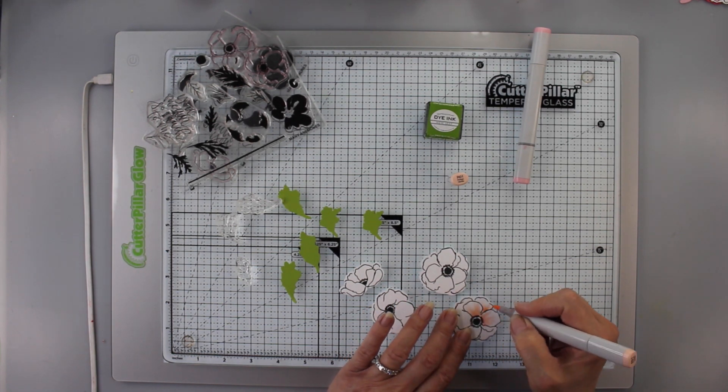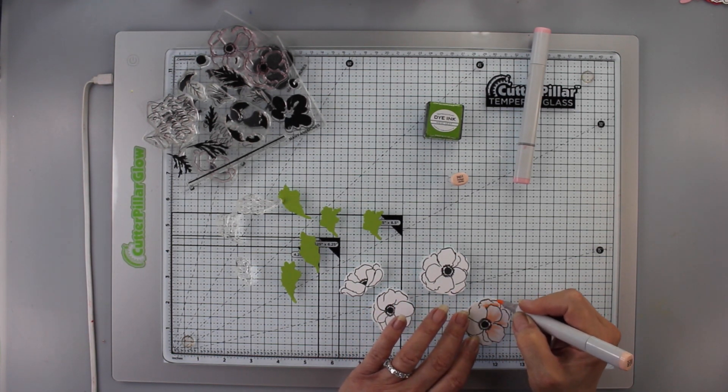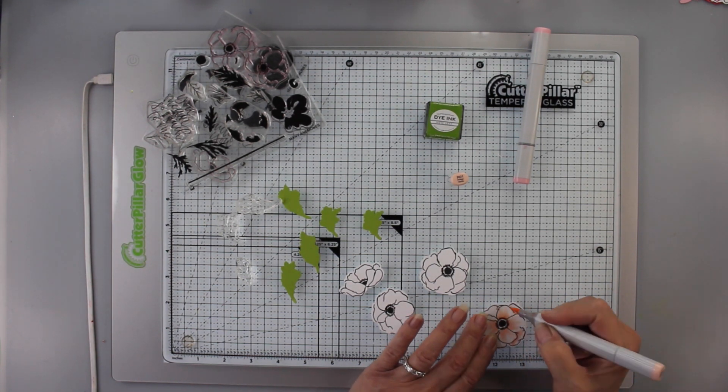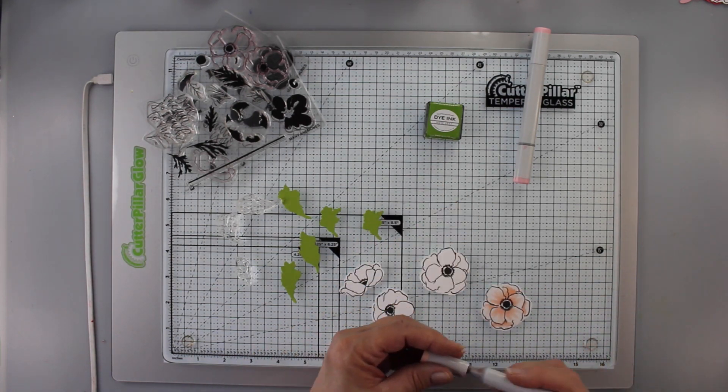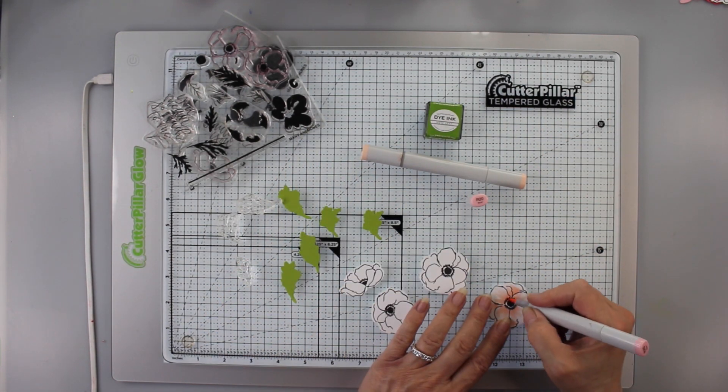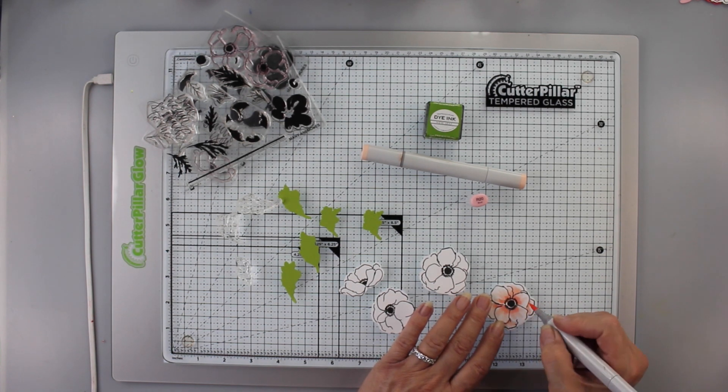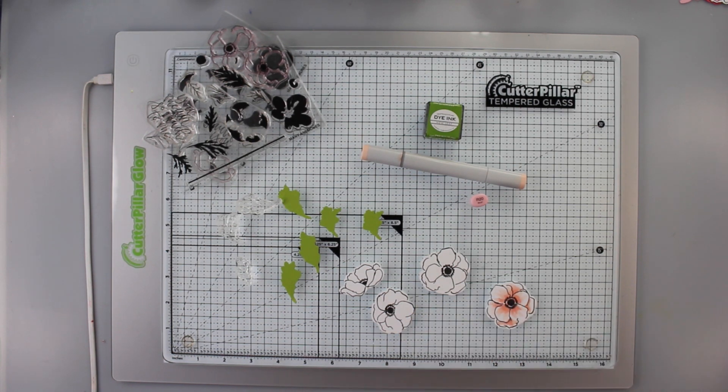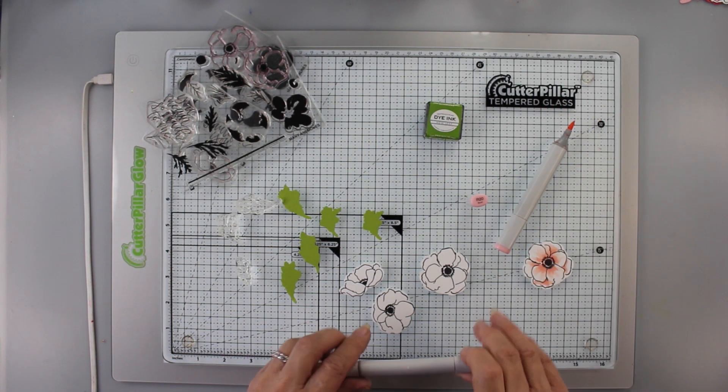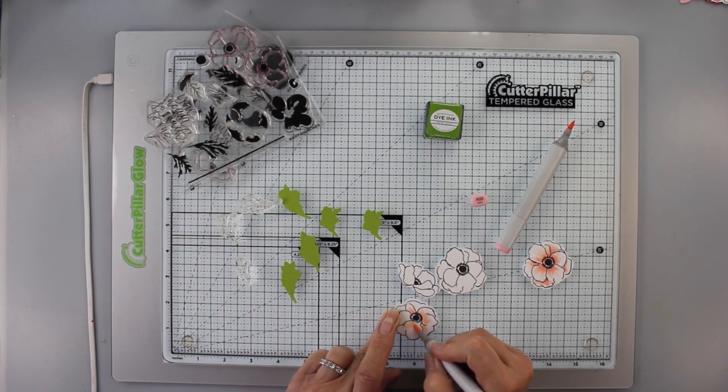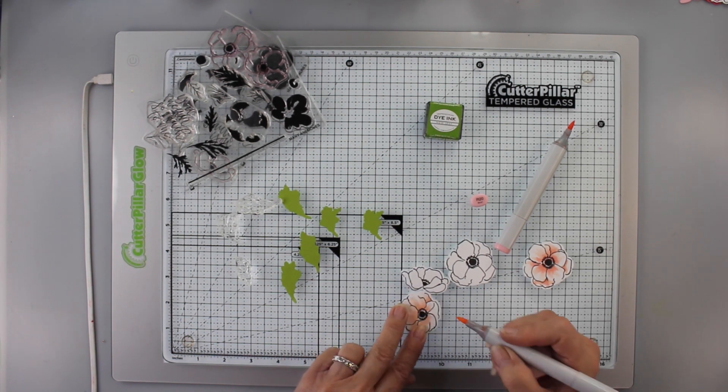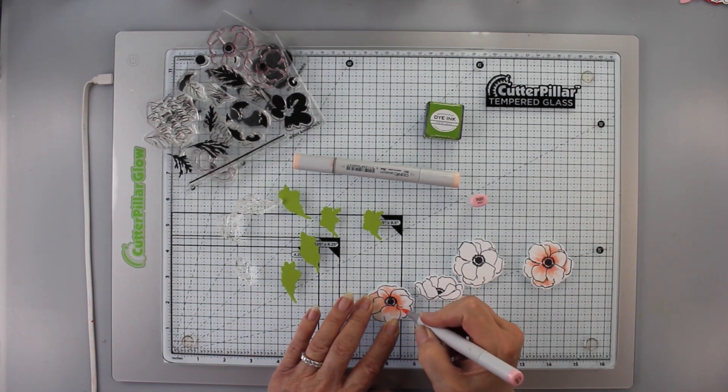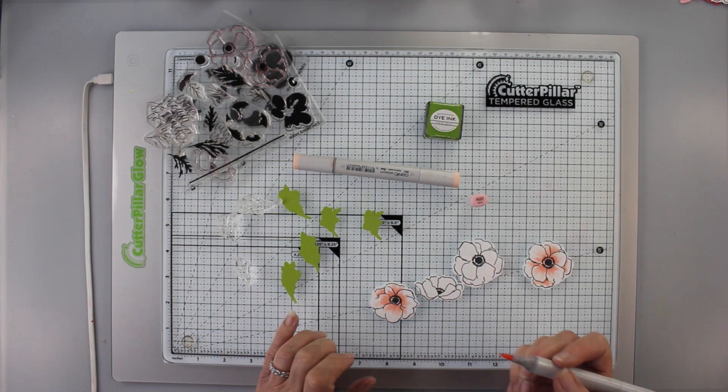So I'm going to just take R01 which is a Copic marker and I'm just going to flick on some color. I want these to be fairly pastel. So I'm going to start out with R01 which is a fairly light color and then I'll deepen it with R20. And I'll do that with all of these flowers just like that one. I'll color all of them exactly the same way. I want to make sure that I'm leaving a lot of white space because I want to keep these fairly pastel.